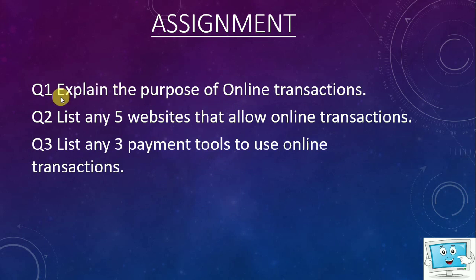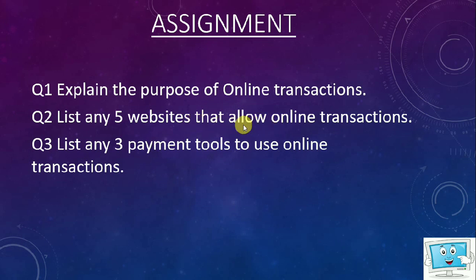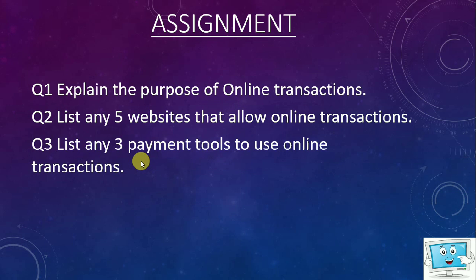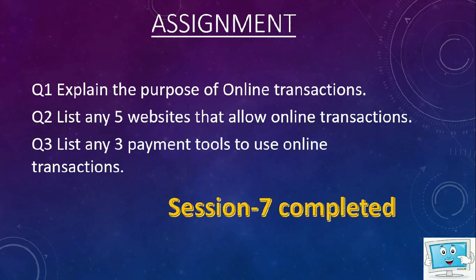Now for the assignment: the first question asks you to explain the purpose of online transactions — write the meaning, why we use it, what purpose it serves, and the various related terms. The second question asks you to list any five websites that allow online transactions. The third question asks you to list any three payment tools used for online transactions, such as credit card and others. Complete all assignments in your notebook, and if there is any doubt you can ask. With this, our session number seven is completed. Thank you.